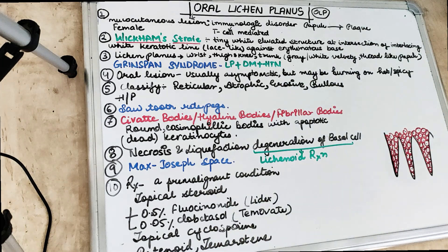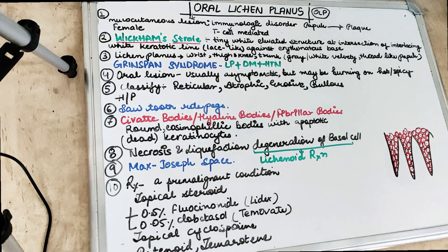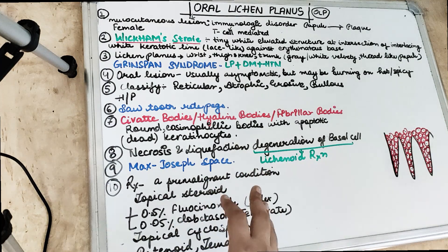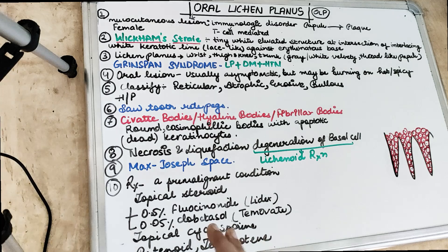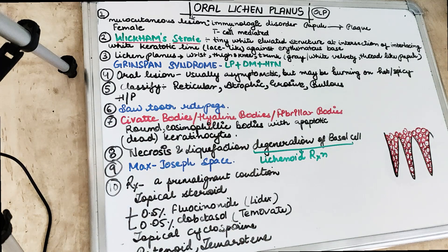Oral lichen planus is usually seen in the female population. Skin lesions are also present, appearing as small angular flat-topped papules on the skin.